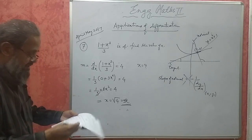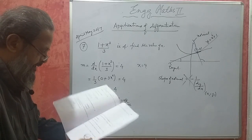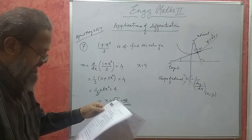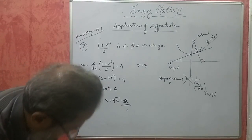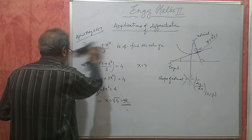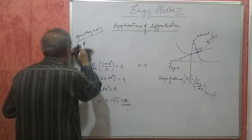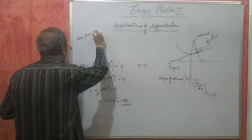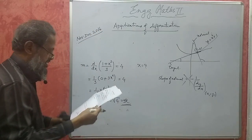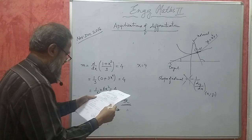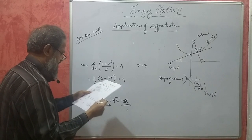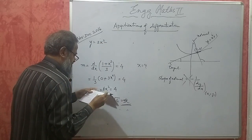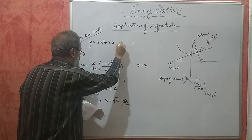So x = √4, that is x = ±2. This is the answer. This carries again 3 marks. Next, November-December 2016, problem number 7, section A, problem number 3. Find the equation to the tangent to the curve y = 3x² + 4x at (1, 2).